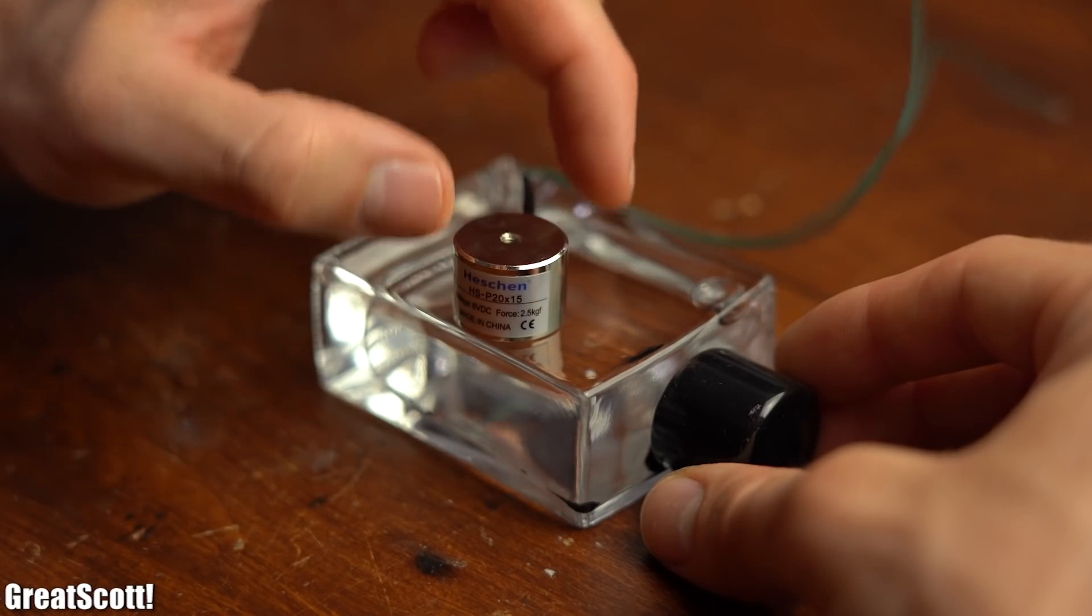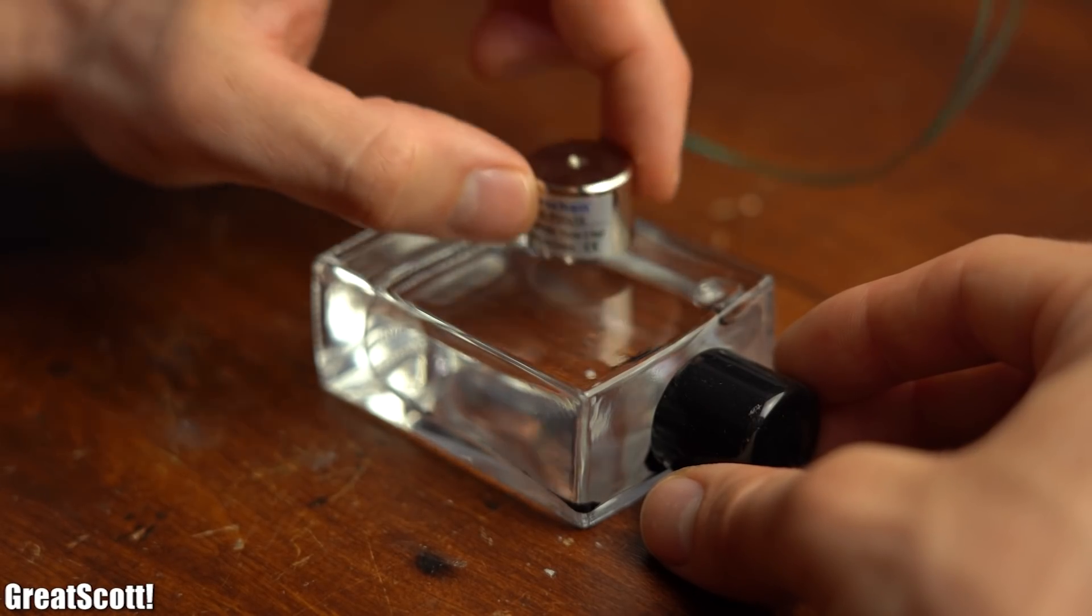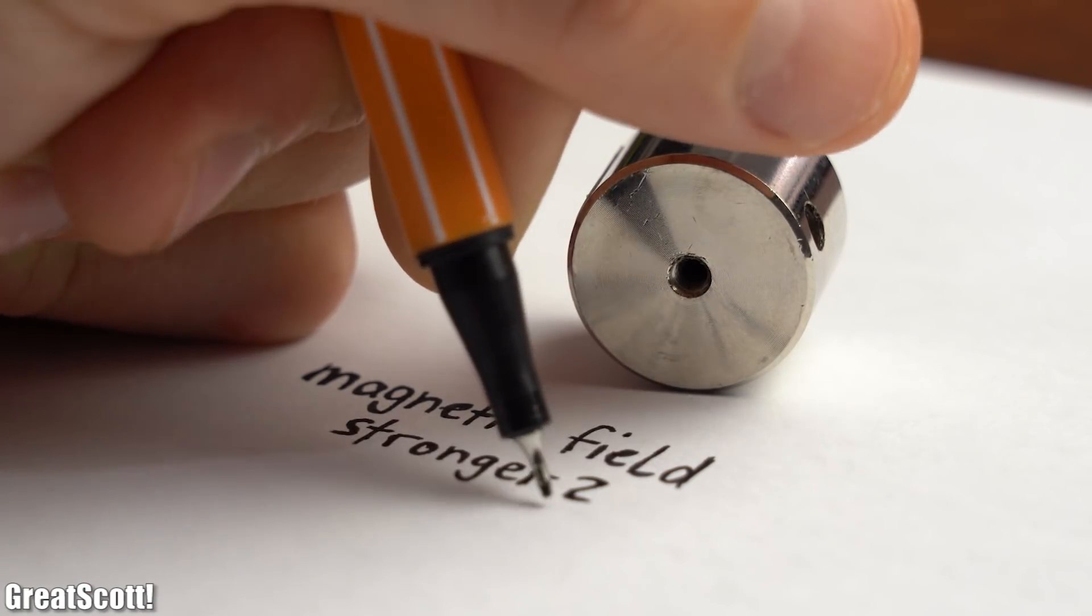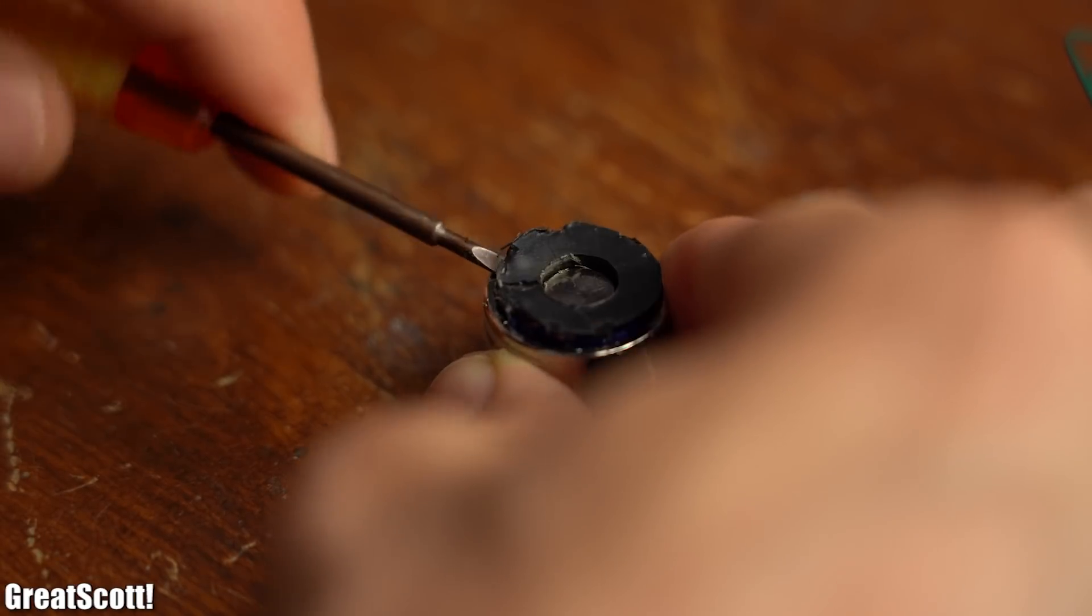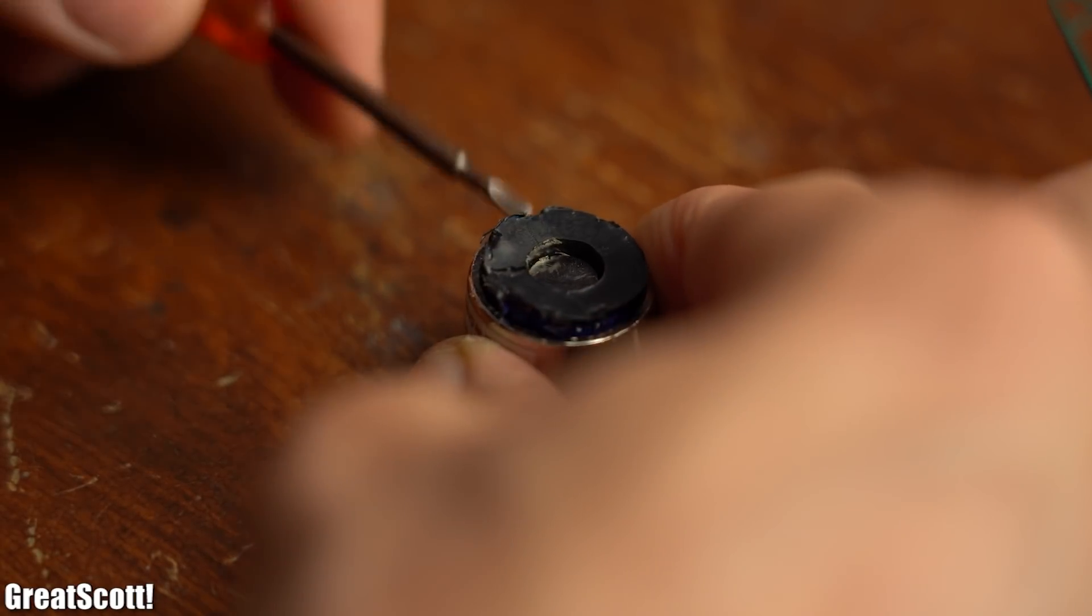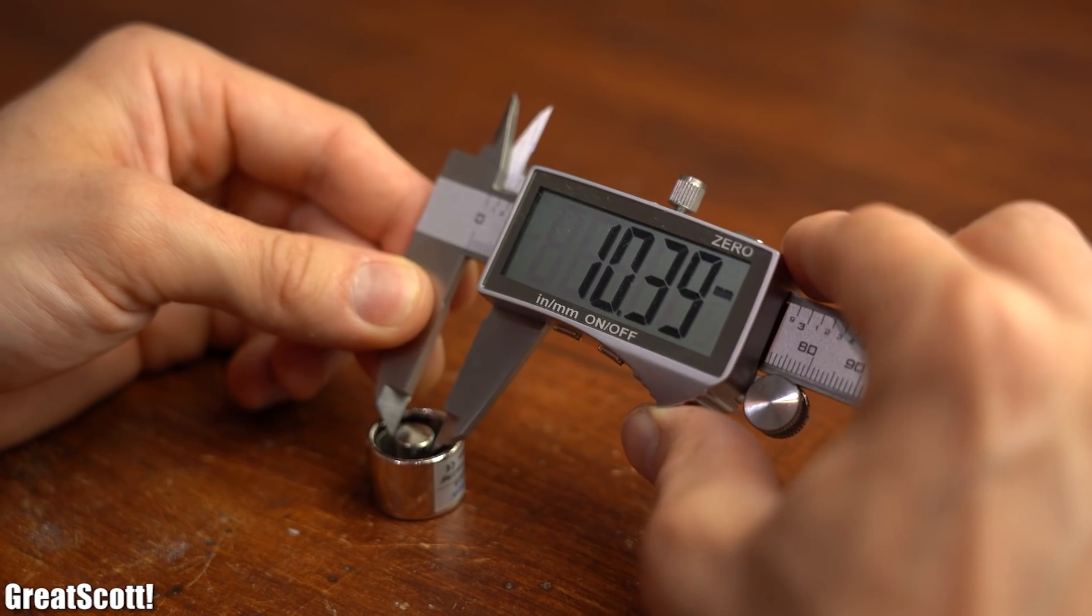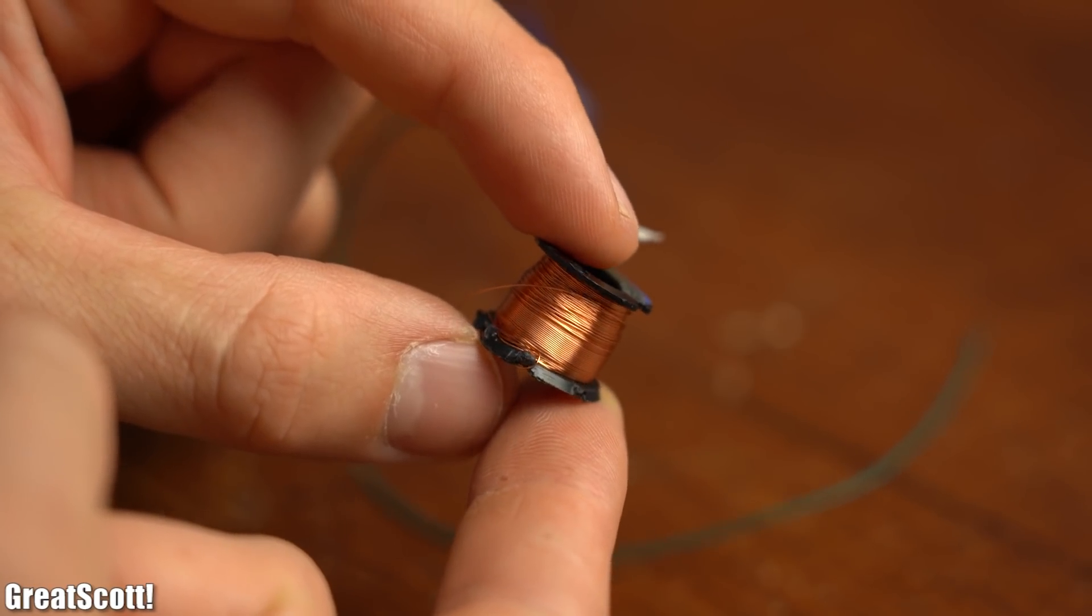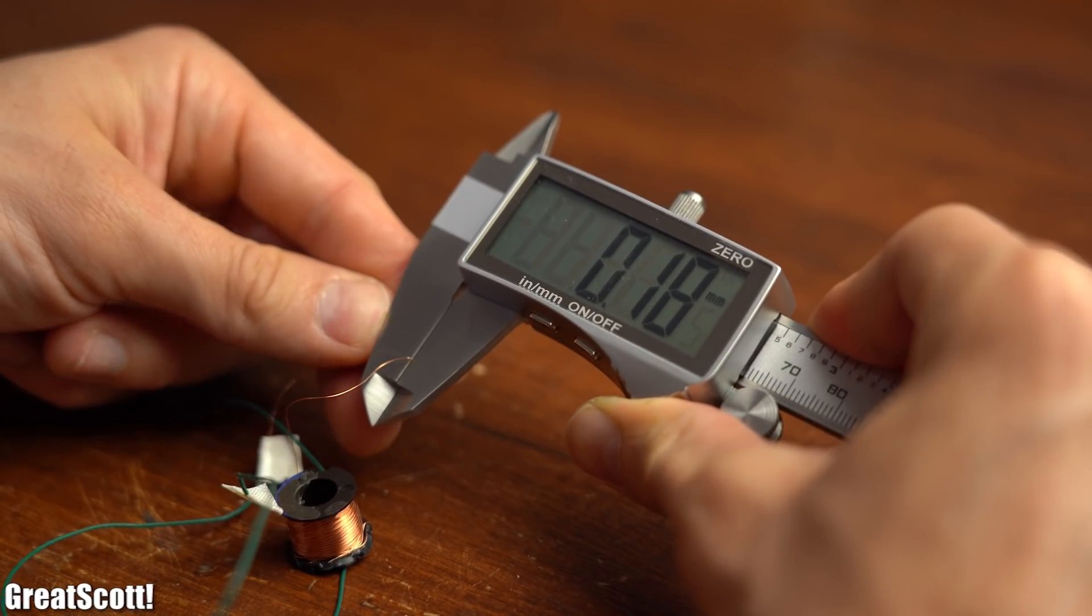But anyway while the big electromagnet didn't fit the small one did perfectly. So how can we make its magnetic field stronger without changing its diameter? To find that out I took the magnet apart and as it turns out it simply consists of a ferromagnetic core with a diameter of 8mm and a coil with tons of windings whose enamel copper wire comes with a diameter of 0.18mm.